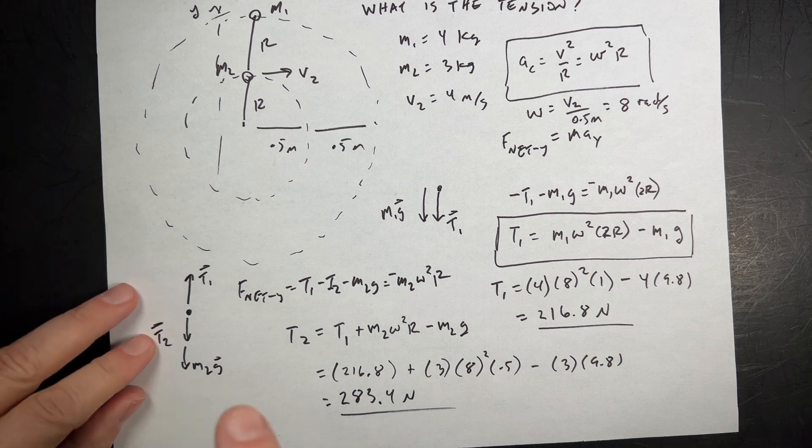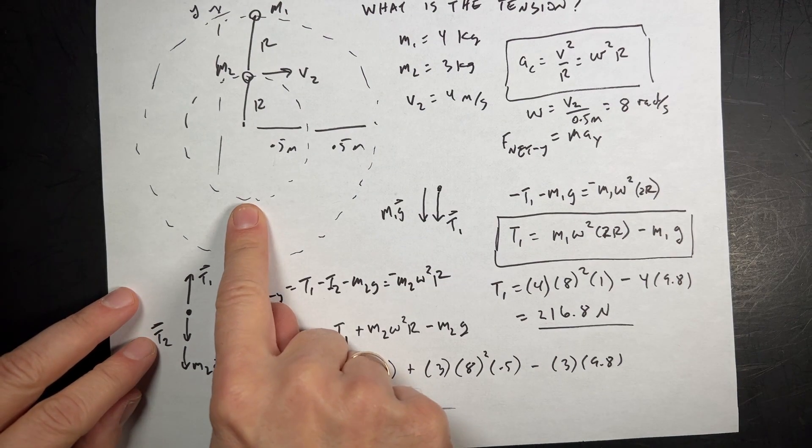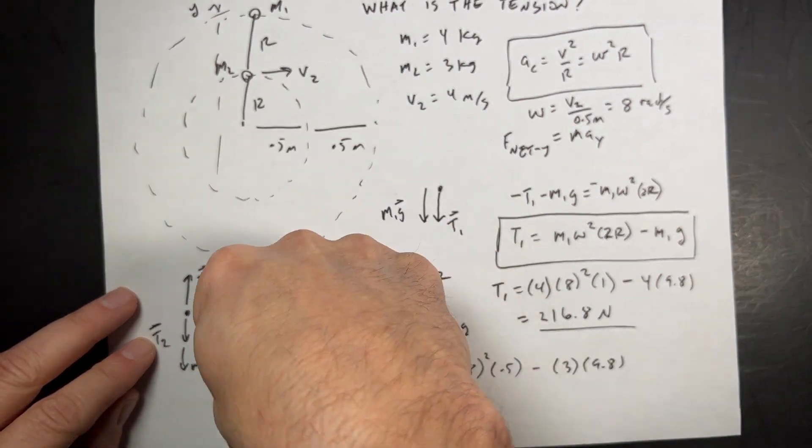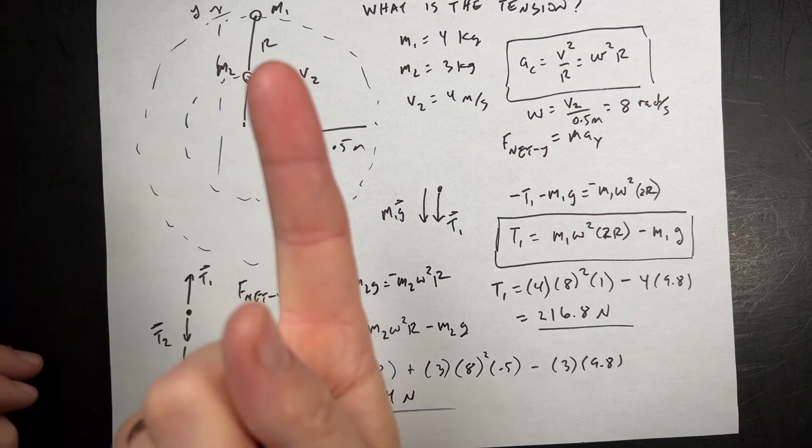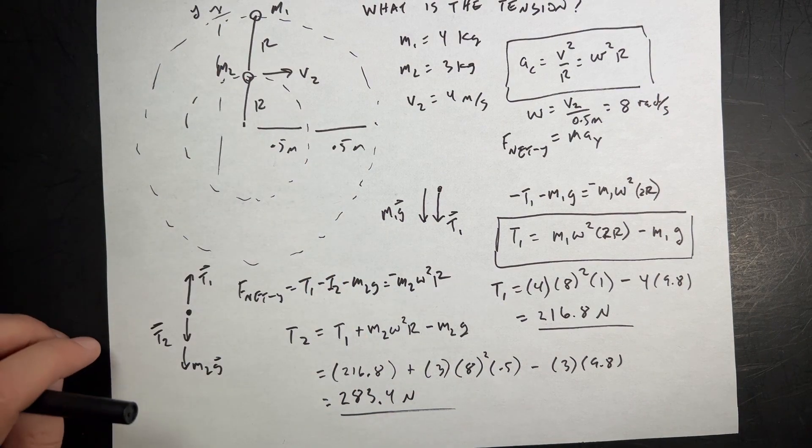If you want to do a variation of the problem, repeat it for when it's down here. Because now it's down here, gravity is pulling down and down and the tension is pulling up. But it's still, and it's accelerating in the upward direction. So that's a little variation for you.